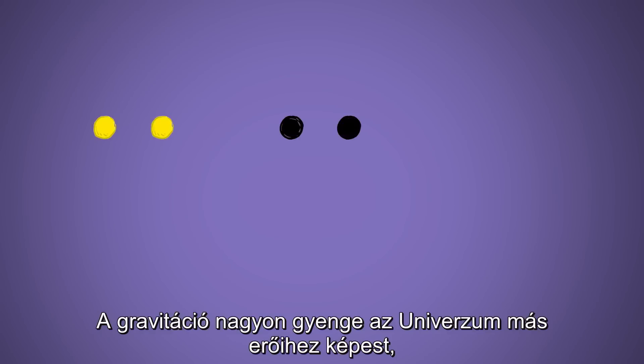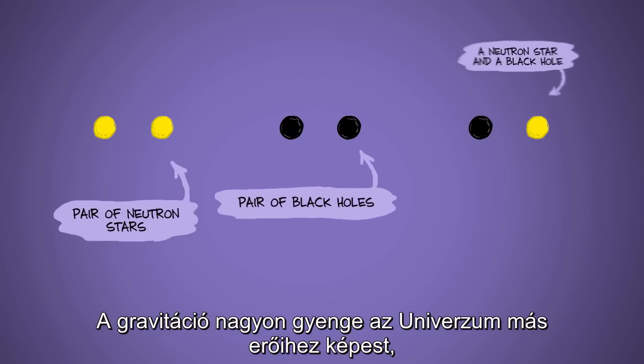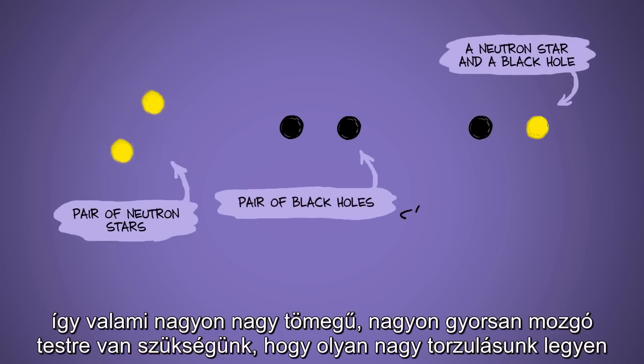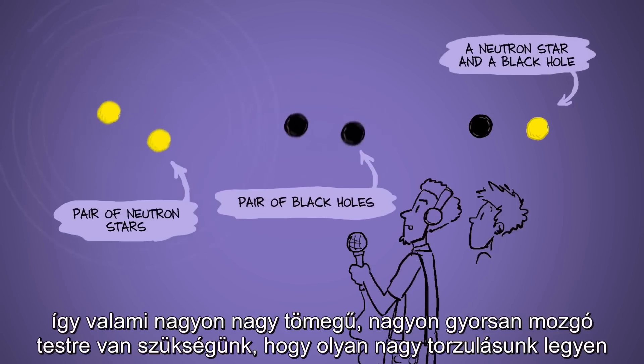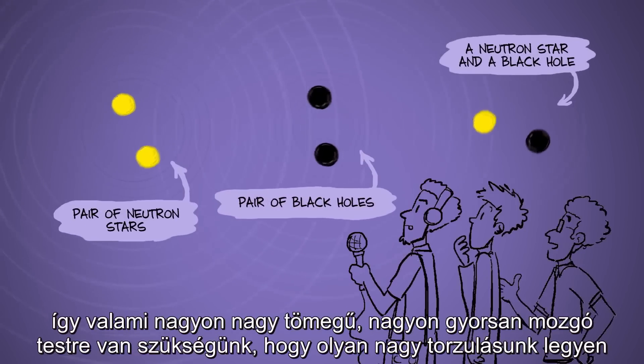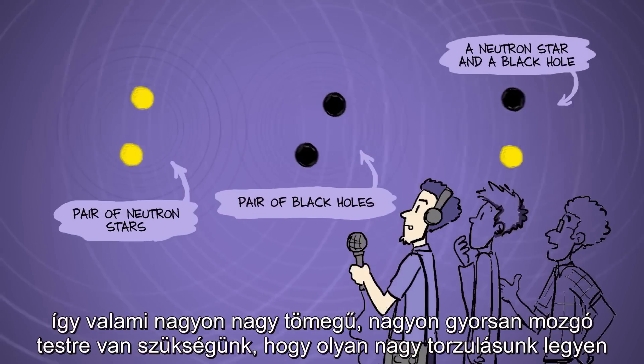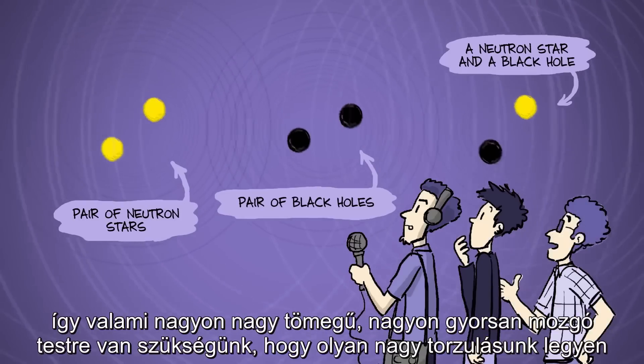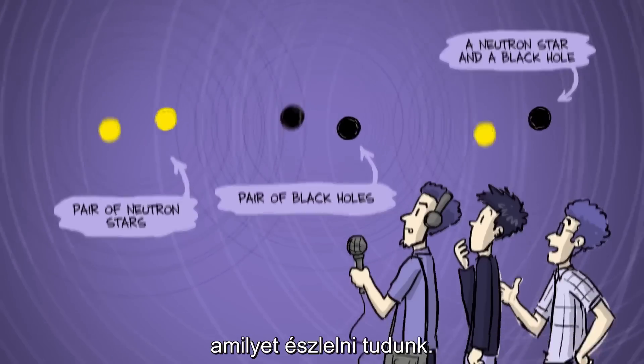Gravity is very weak on the scale of other forces in the universe, so you need something really, really massive moving very, very fast to make the big ripples that we can detect.